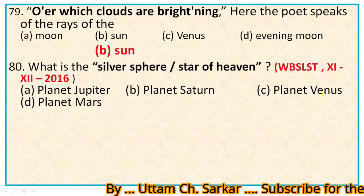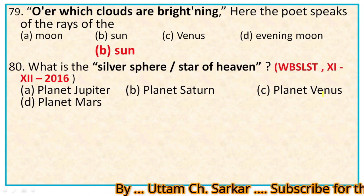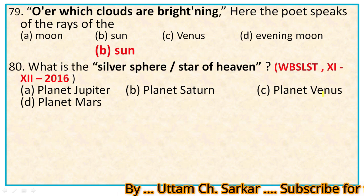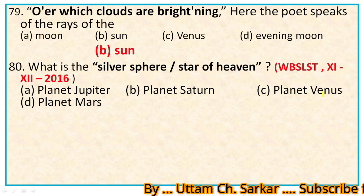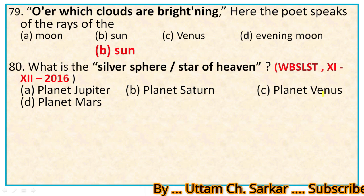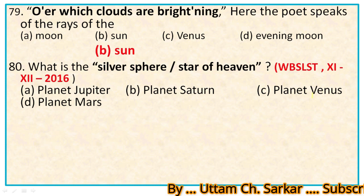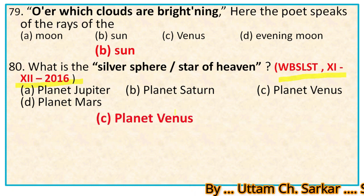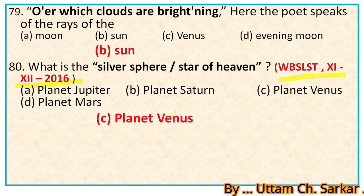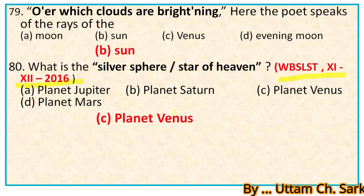Question 80: What is the silver sphere or star of heaven? Options: planet Jupiter, planet Saturn, planet Venus, planet Mars. This question was selected in WB SLST 11-12 paper in 2016. The right option is planet Venus, because 'silver sphere' or 'star of heaven' refers to the moon or planet Venus.